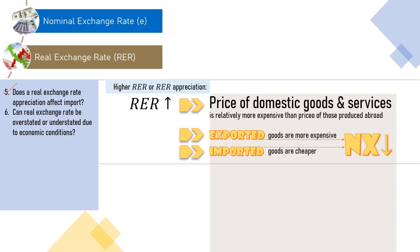As for question 6, first we have to understand that real exchange rate is simply a measurement used to analyze or make decisions in an open economy, similar to other measures like inflation or GDP. We use data to measure it. Overstatement or understatement of course can occur, because the data we use may be less accurate or imperfect, which most likely they are.